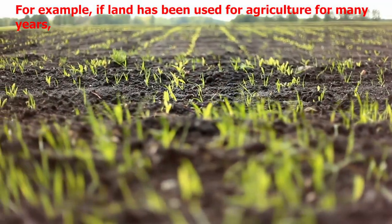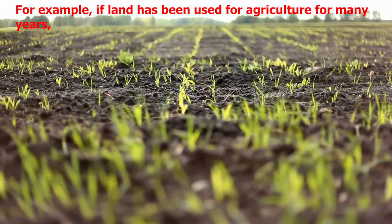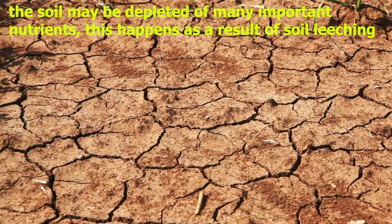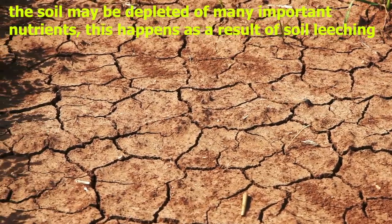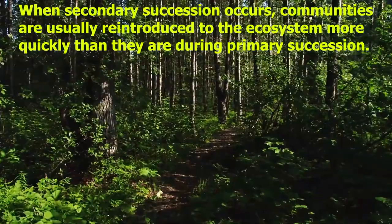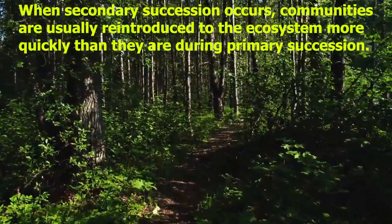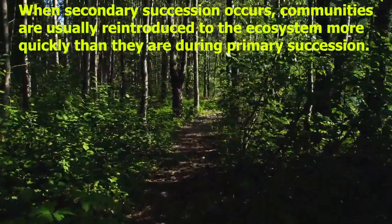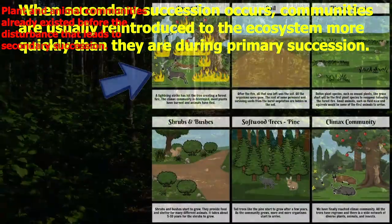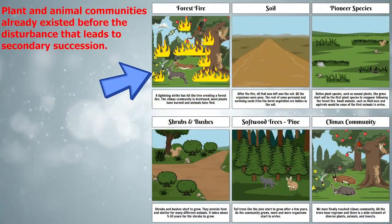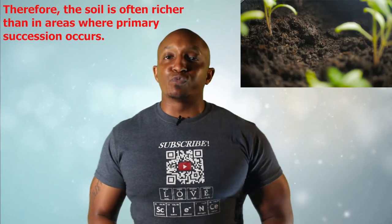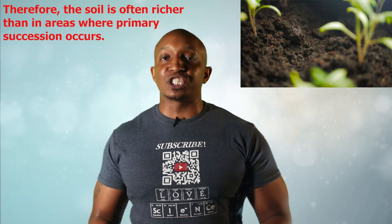For example, if land has been used for agriculture for many years, the soil may be depleted of many important nutrients. This happens as a result of soil leaching. When secondary succession occurs, communities are usually reintroduced to the ecosystem more quickly than they are during primary succession. Plant and animal communities already existed before the disturbance that leads to secondary succession. Therefore, the soil is often richer than in areas where primary succession occurs.